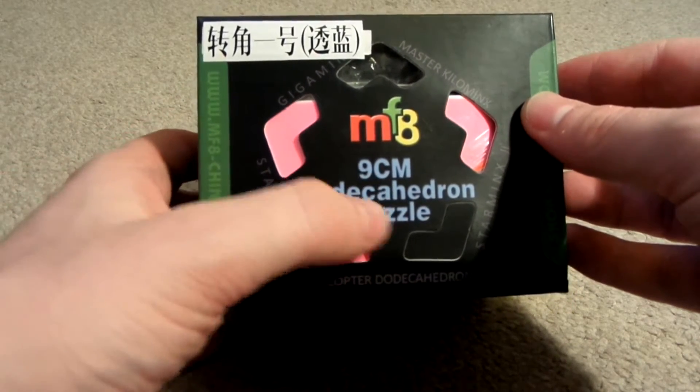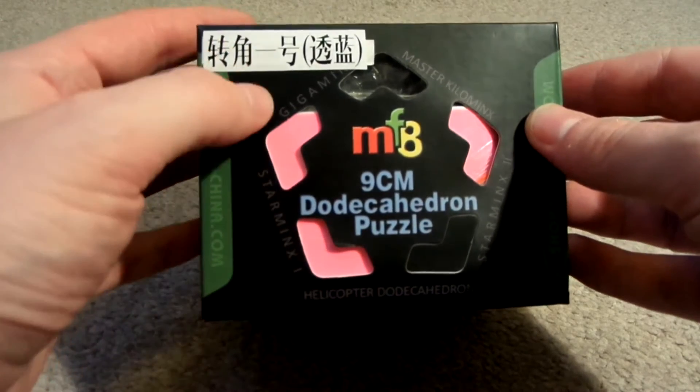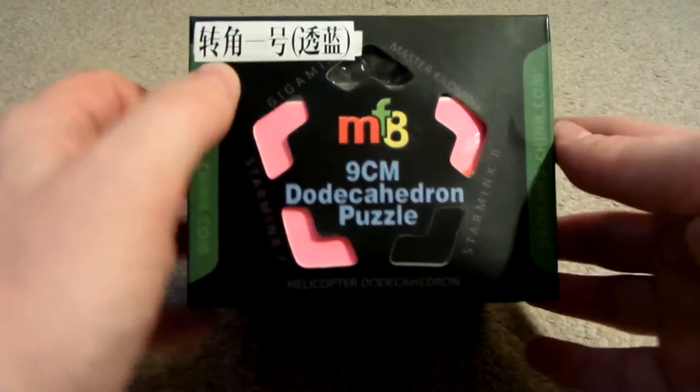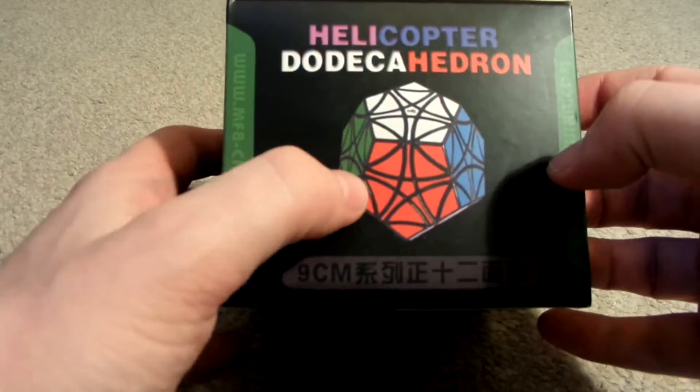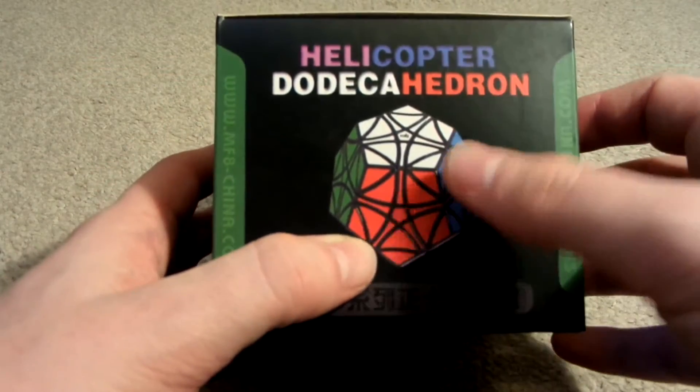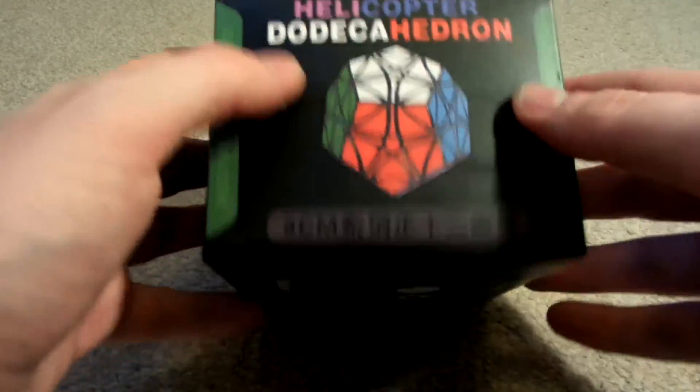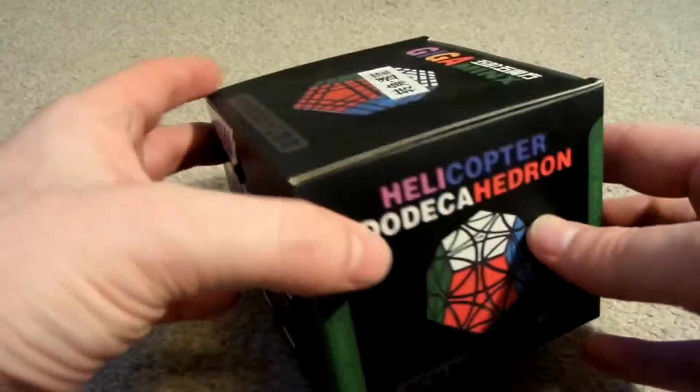MF-8, nice, 9cm dodecahedron puzzle. Got a word sticker on it there. Helicopter dodecahedron. Yeah, I wouldn't mind getting one of these in the limited edition green. They are quite hard to find though in that colour.